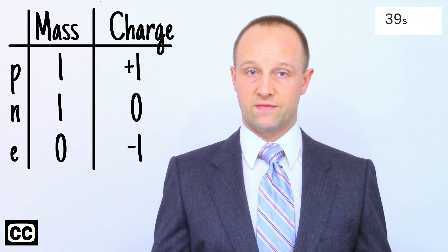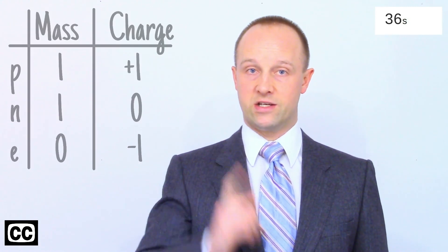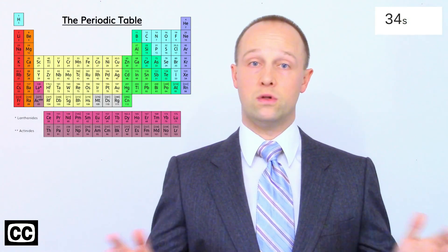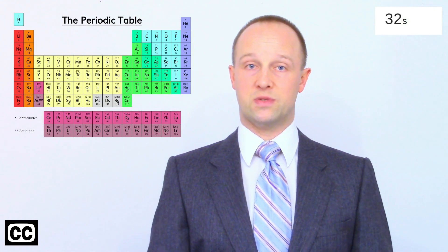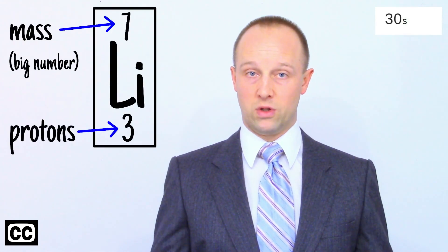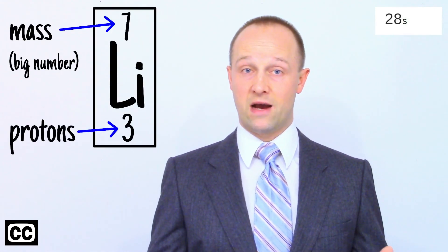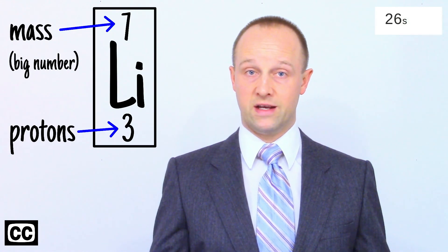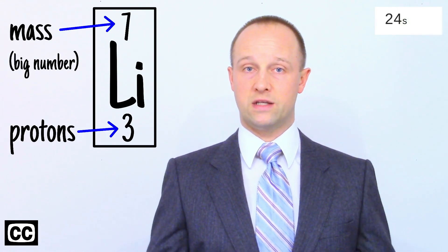Protons and neutrons have the same mass as each other, one atomic mass unit each. The periodic table is a list of all the elements we know about, arranged to group similar elements together. The smaller number in an element's entry tells us how many protons it has in its nucleus. It's called either the proton number or the atomic number.